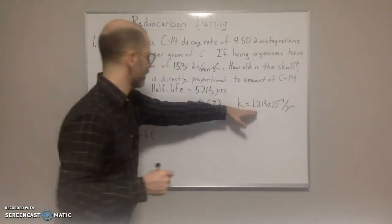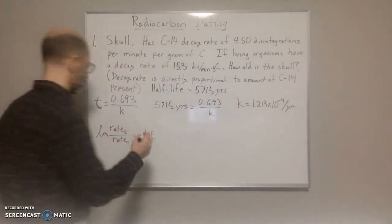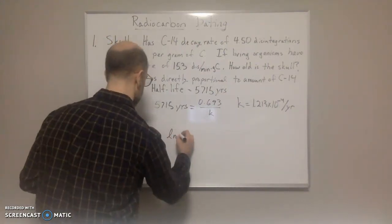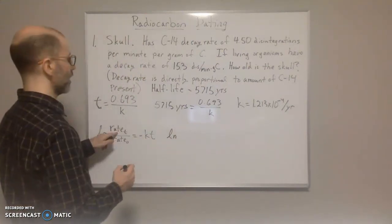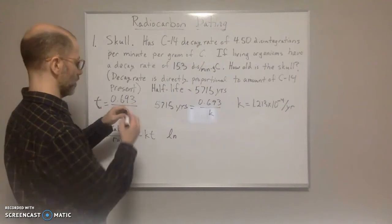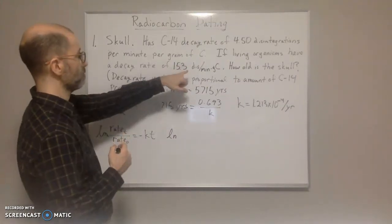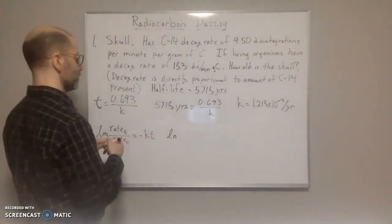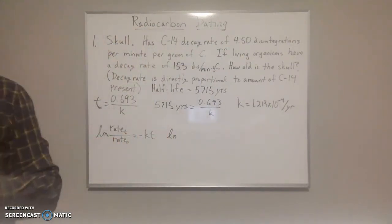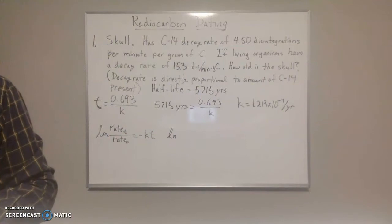So now we can take k and plug it into here, and we can plug in the rates. So here we're going to have ln of rate at time t. So that's going to be 4.50. Let me just double check, make sure I got this right.